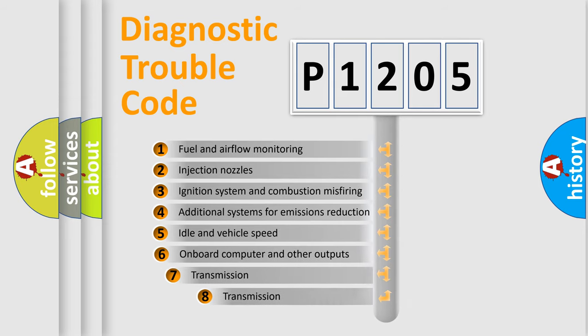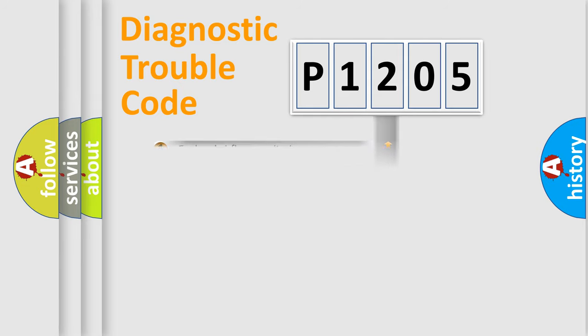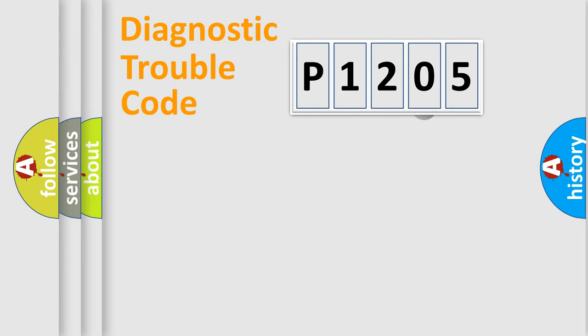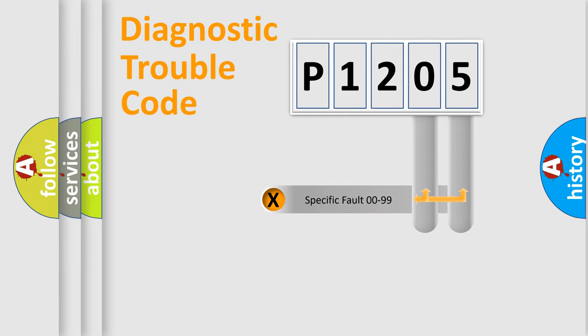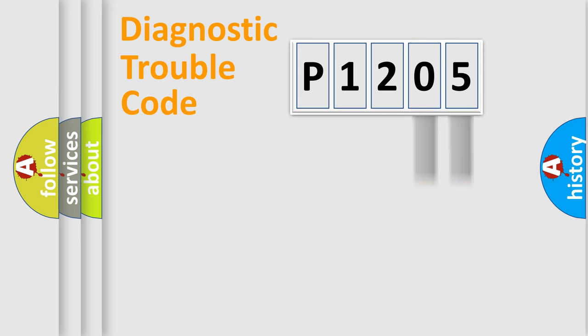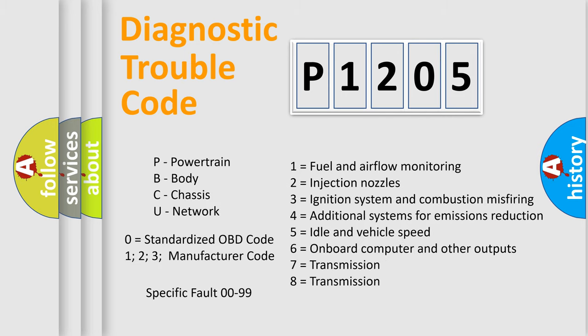The third character specifies a subset of errors. The distribution shown is valid only for the standardized DTC code. Only the last two characters define the specific fault of the group. Such a division is valid only if the second character code is expressed by the number zero.